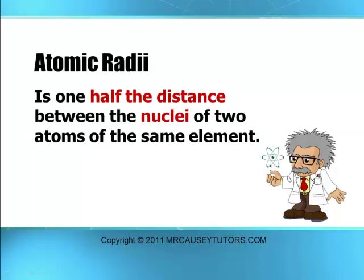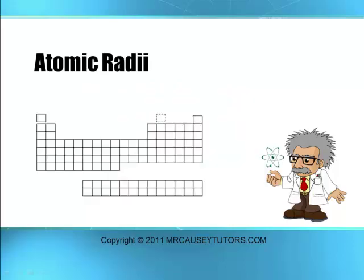Atomic radii is one half the distance between the nuclei of two atoms of the same element. You have two atoms of the same element right next to each other, you measure the distance between the two nuclei, cut that in half, and that's the radius of one atom of that element. The trend on atomic radii: it decreases as you go left to right, and it decreases as you go up.